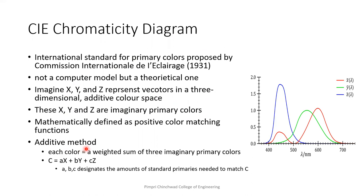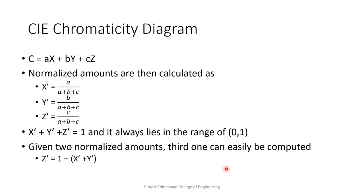What to do with this additive method? We will define each color as a weighted sum of these three imaginary primary colors. That means, if C is my color, I have to add 'a' amount of X, and 'b' amount of Y, and 'c' amount of Z to get this particular color C. So a, b, c designates the amounts of standard primaries needed to match C. C equals to aX plus bY plus cZ.